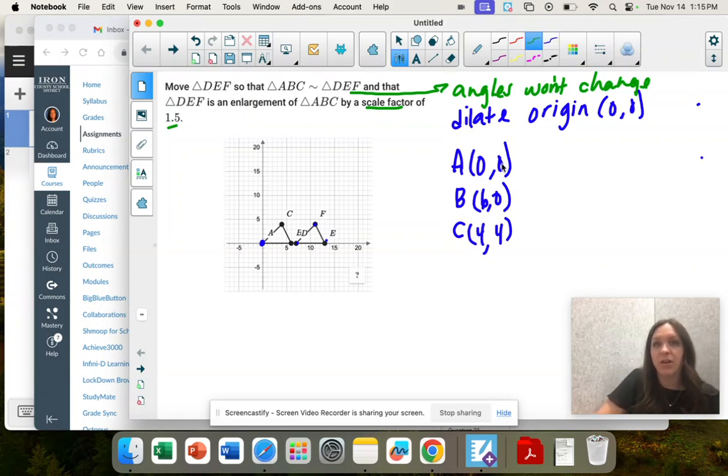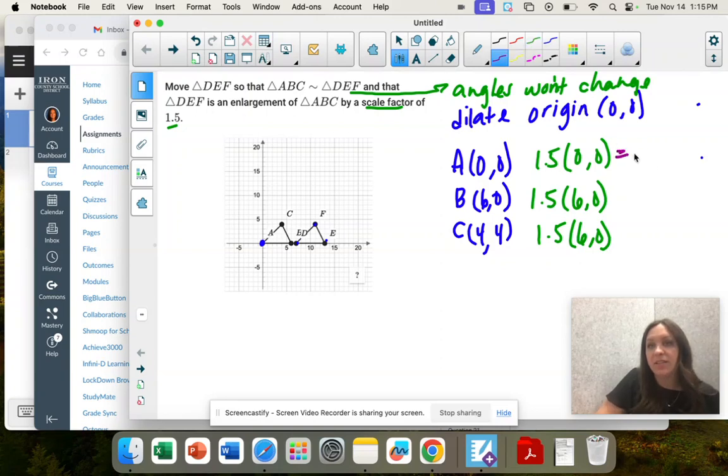So now to enlarge it, we're going to multiply these by 1.5. And that's going to give us DEF.